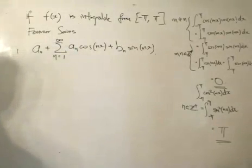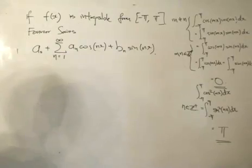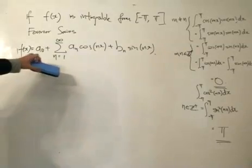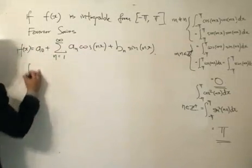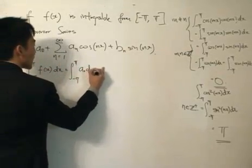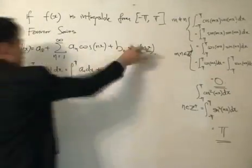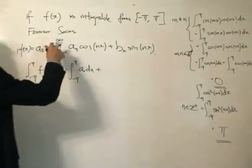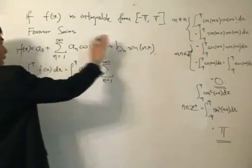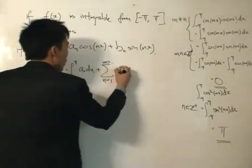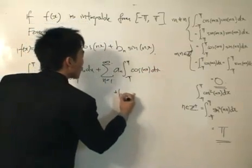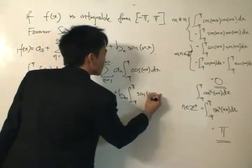Our main objective is to find constants a₀, aₙ, and bₙ. First, assume f(x) equals the Fourier series. We integrate both sides with respect to x, taking limits from minus pi to pi. The left side becomes the integral of f(x)dx from minus pi to pi. On the right, the integral of a₀ dx plus, making the assumption that the integral and summation signs are interchangeable, the summation from n equals 1 to infinity of aₙ times the integral of cosine(nx)dx plus bₙ times the integral of sine(nx)dx, all from minus pi to pi.